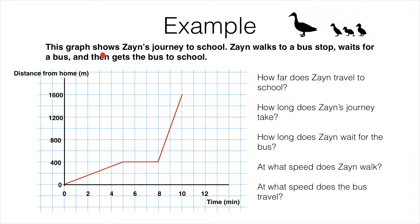This graph shows Zane's journey to school. Zane walks to a bus stop, waits for a bus, and then gets the bus to school. On the vertical axis we have numbers showing us the distance from Zane's home, and along the horizontal axis we've got minutes marked.